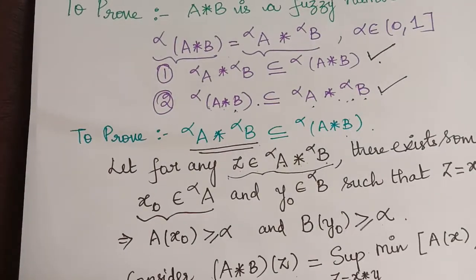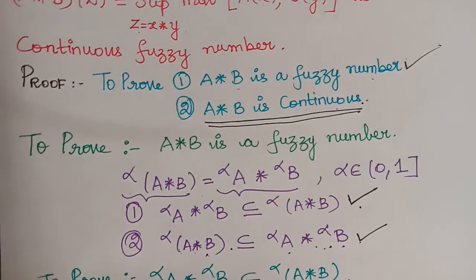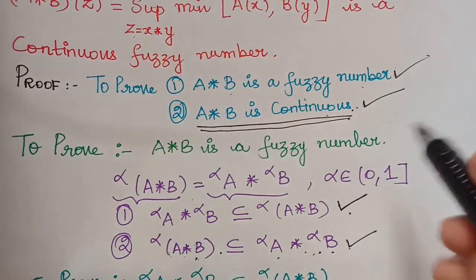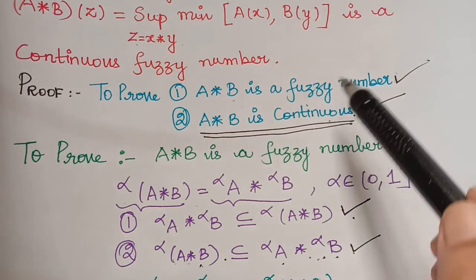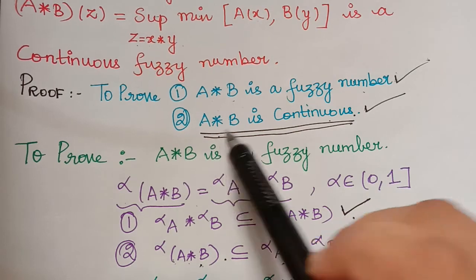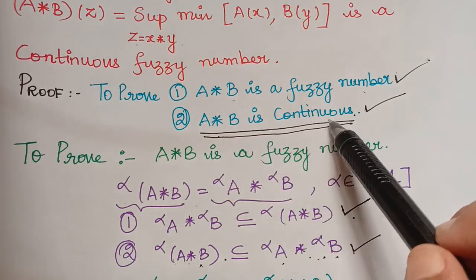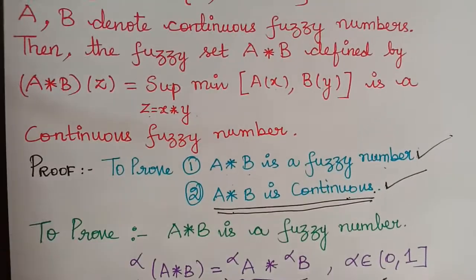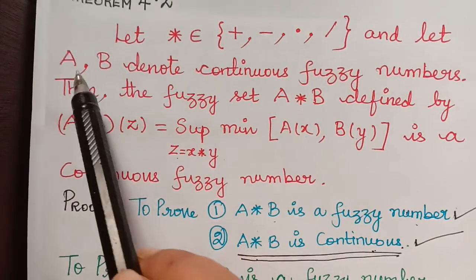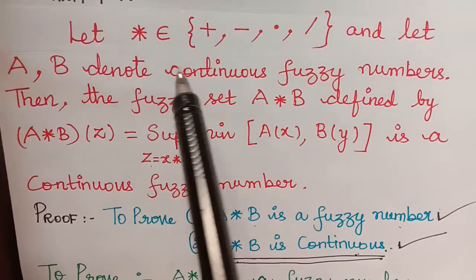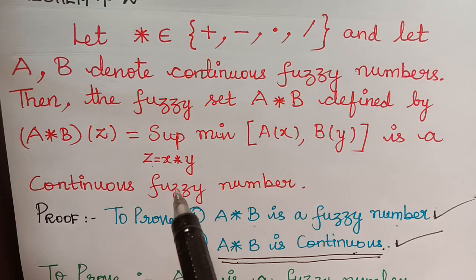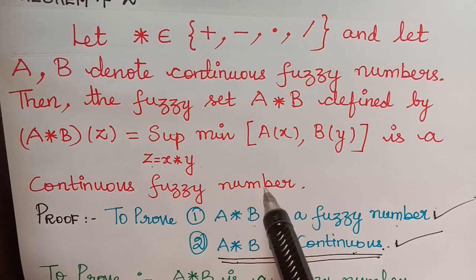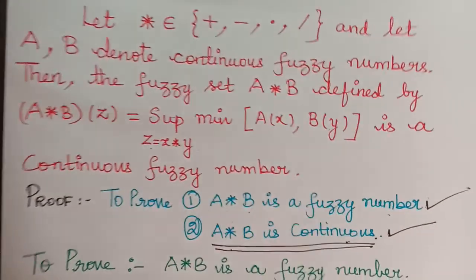Therefore we have proved that a★b is continuous. We had already proved that a★b is a fuzzy number, and now we have proved that a★b is continuous. Hence, if a and b are continuous fuzzy numbers, then a★b will also be a continuous fuzzy number. Hope you have understood this theorem. Thank you.